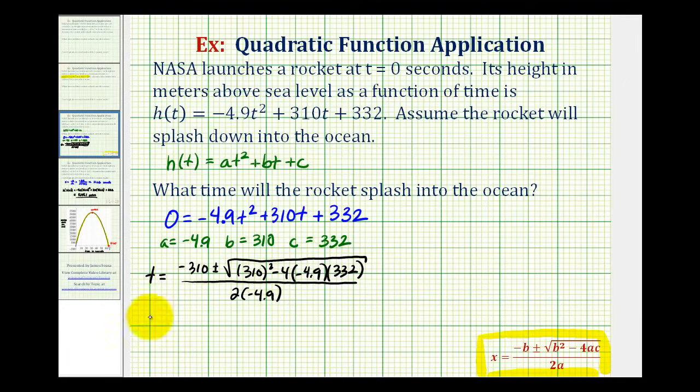Now we'll simplify this in pieces. We'll have t equals -310 plus or minus the square root of the value of this expression here, which is the discriminant. We'll come back to that, divided by -9.8.